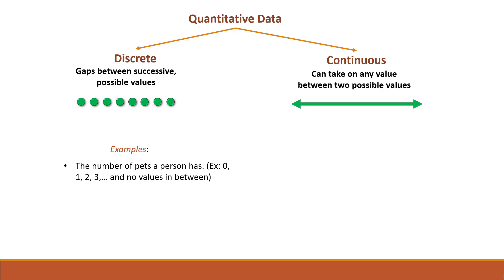Here's the first example of discrete quantitative data. The number of pets a person has. What are the possible values? 0, meaning no pets, 1, 2, 3, and so on and so forth, with no values in between, right? You don't really want to picture one and a half pet. So that is an example of discrete quantitative data.